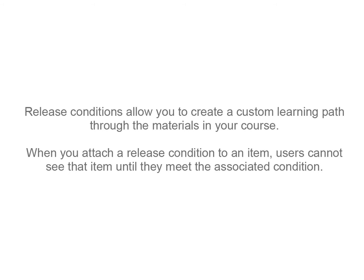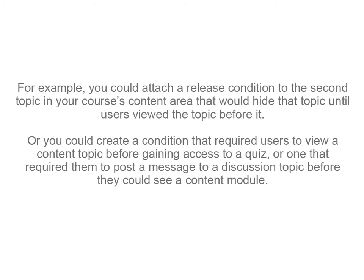Release conditions allow you to create a custom learning path through the materials in your course. When you attach a release condition to an item, users cannot see that item until they meet the associated condition. For example, you could attach a release condition to the second topic in your course's content area that would hide that topic until users viewed the topic before it. Or you could create a condition that required users to view a content topic before gaining access to a quiz, or one that required them to post a message to a discussion topic before they could see a content module.